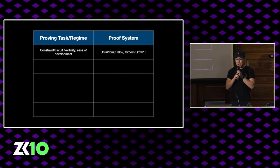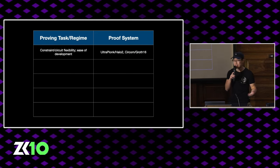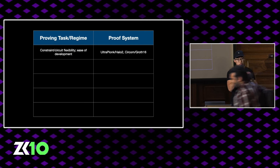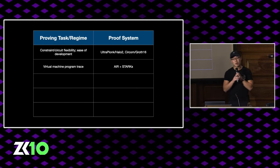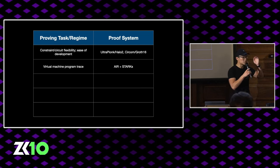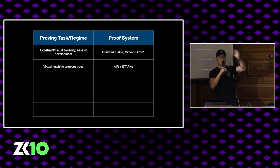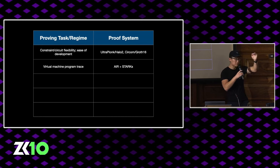For example, if you care about constraint or circuit flexibility and ease of design, you might want to go with something like UltraPlonk or Sercom, which allows you to define lots of constraints however you want. On the other hand, if you care about proving the program trace of VM execution specifically, then you might want to consider AIR or STARKs, because there you have the specialized time-step constraint.